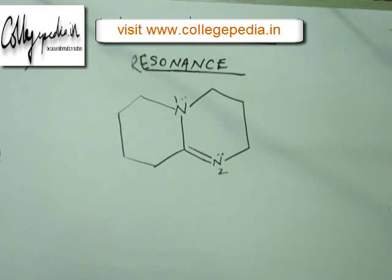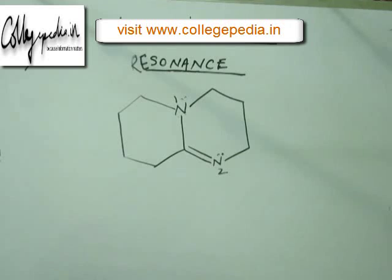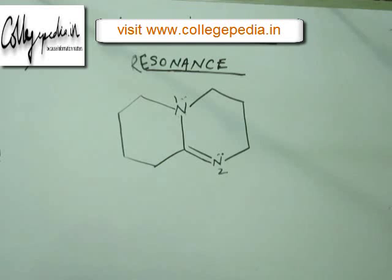Resonance spreads the charge in the molecule. Resonating structures are hypothetical but still we use them in reactions because it is the kind of structure we are acquainted to. Resonance hybrid gives us the real distribution of electronic wave in a molecule.